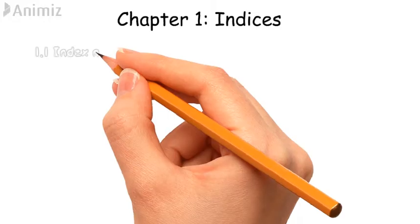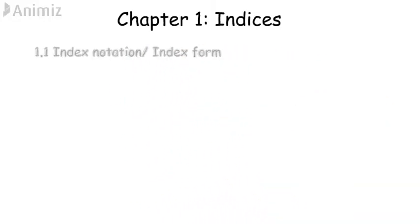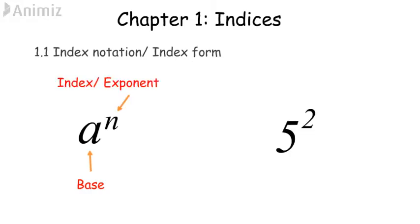First, we learn index notation or index form. If we have a to the power of n, then a is the base and n is the index or exponent. For example, if 5 to the power of 2, then 5 is the base and 2 is the index or exponent.